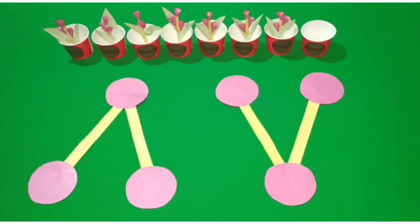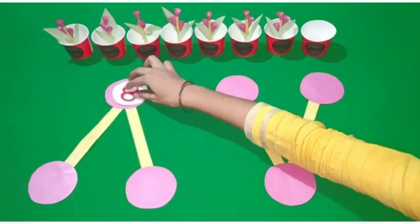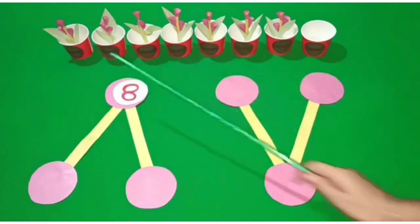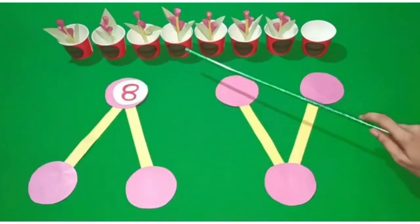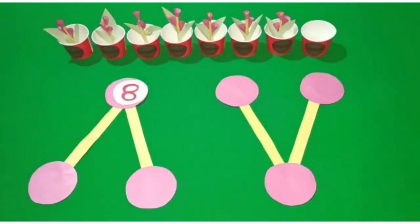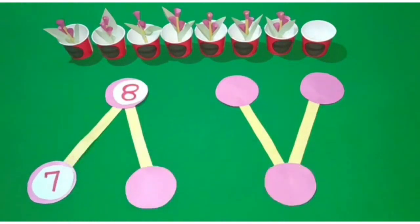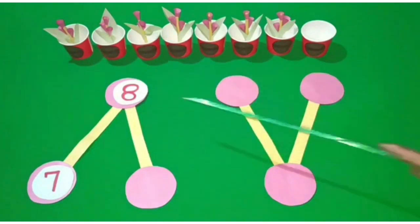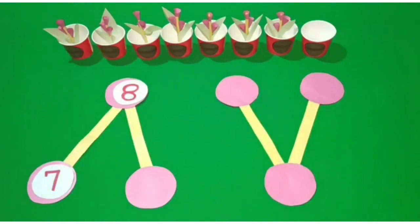Students, there are 8 pots. See, how many pots have flowers? Count with me: 1, 2, 3, 4, 5, 6, 7. There are flowers in 7 pots. 7 out of 8 pots have flowers. See, how many pots do not have flowers? Yes — 1. No flowers in 1 pot.